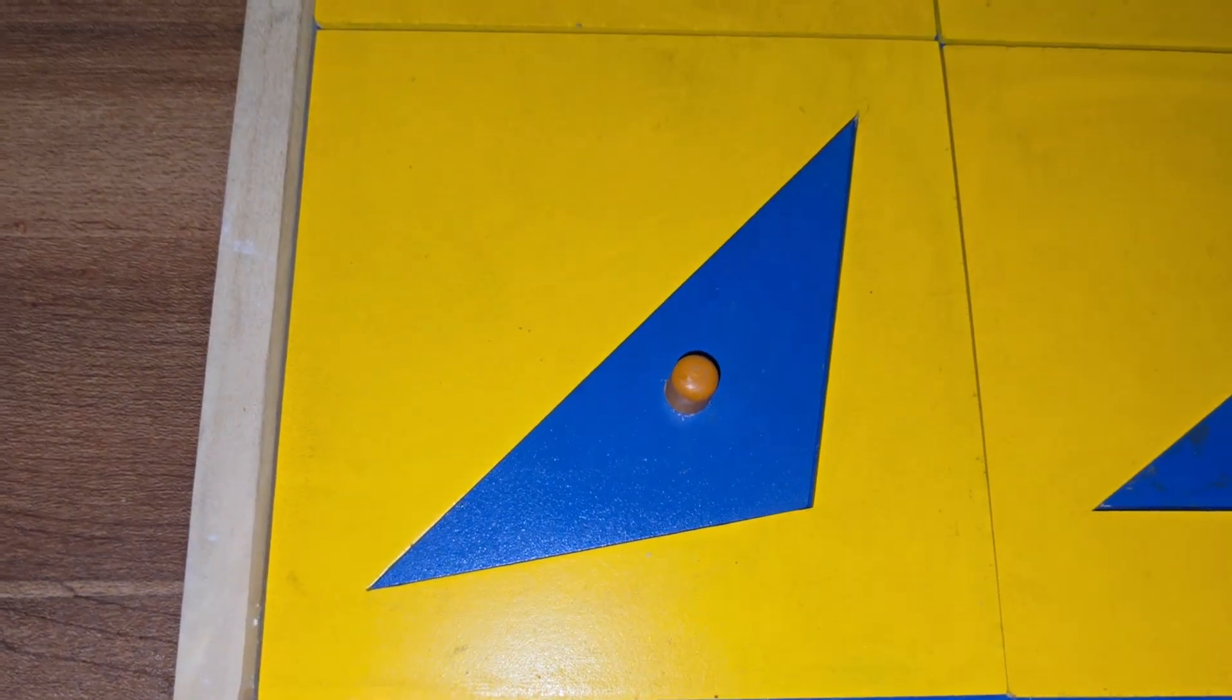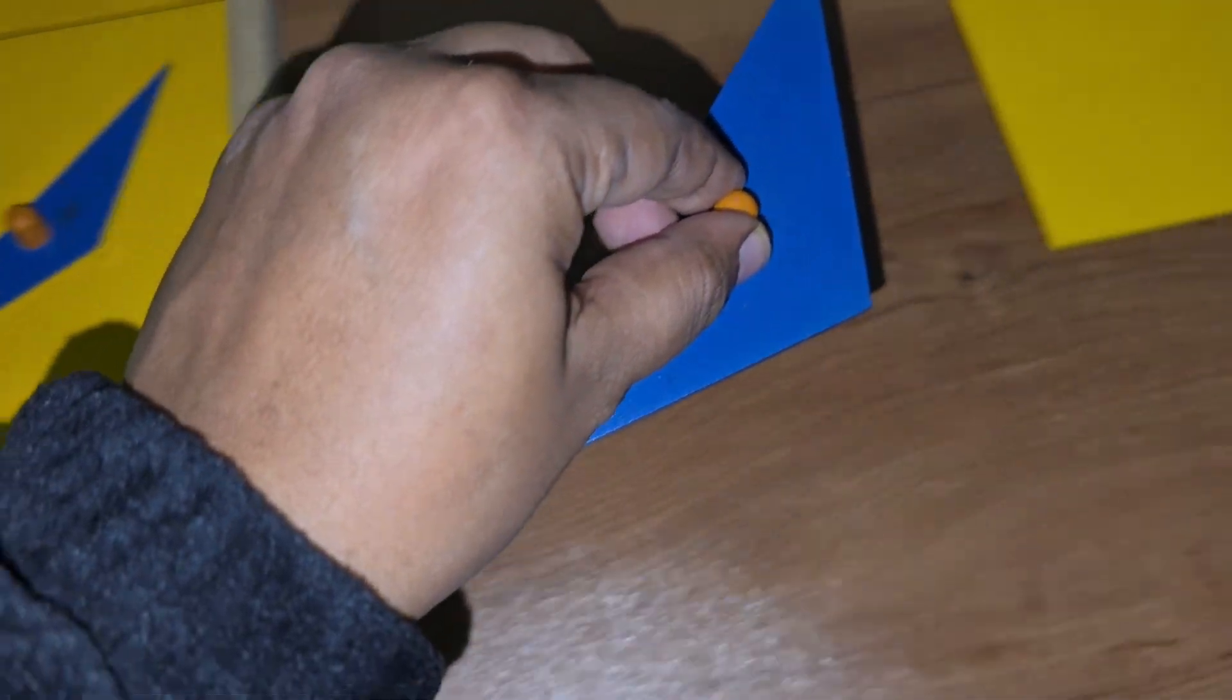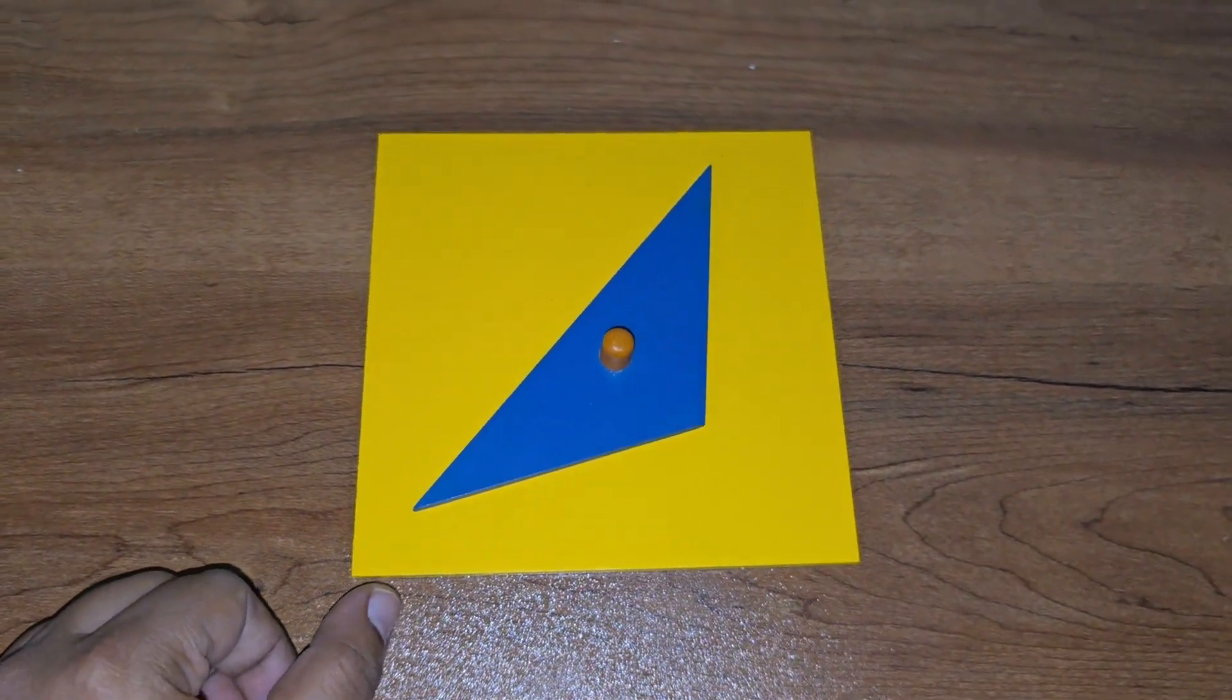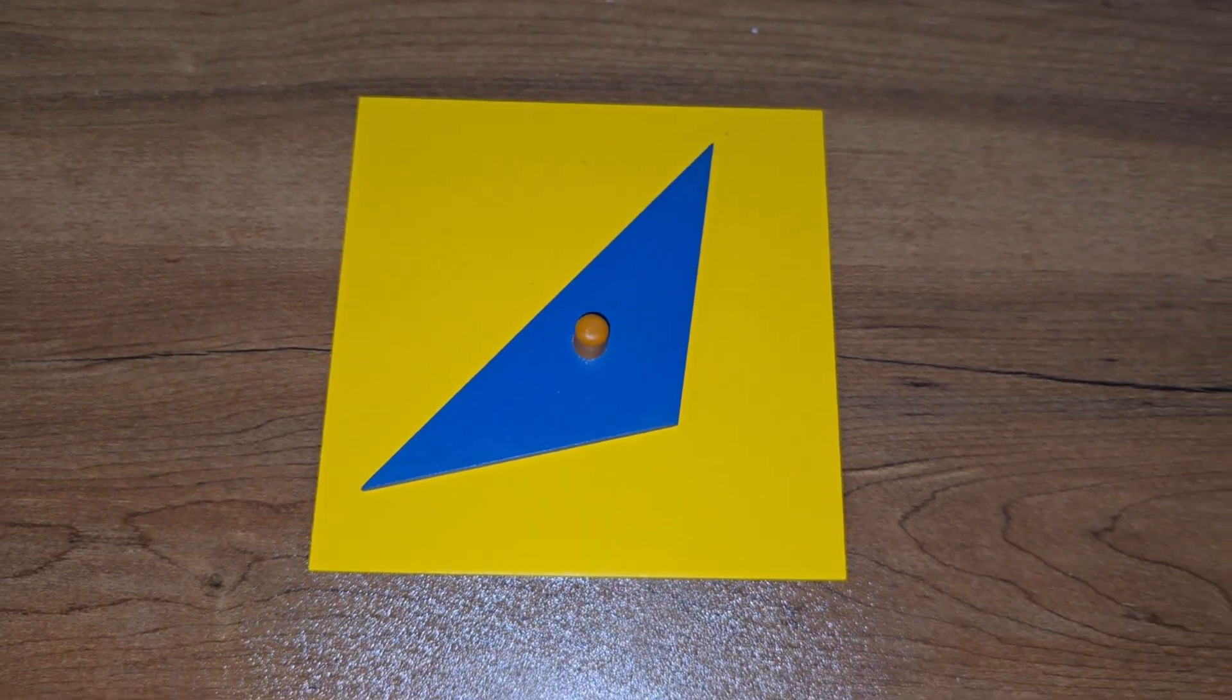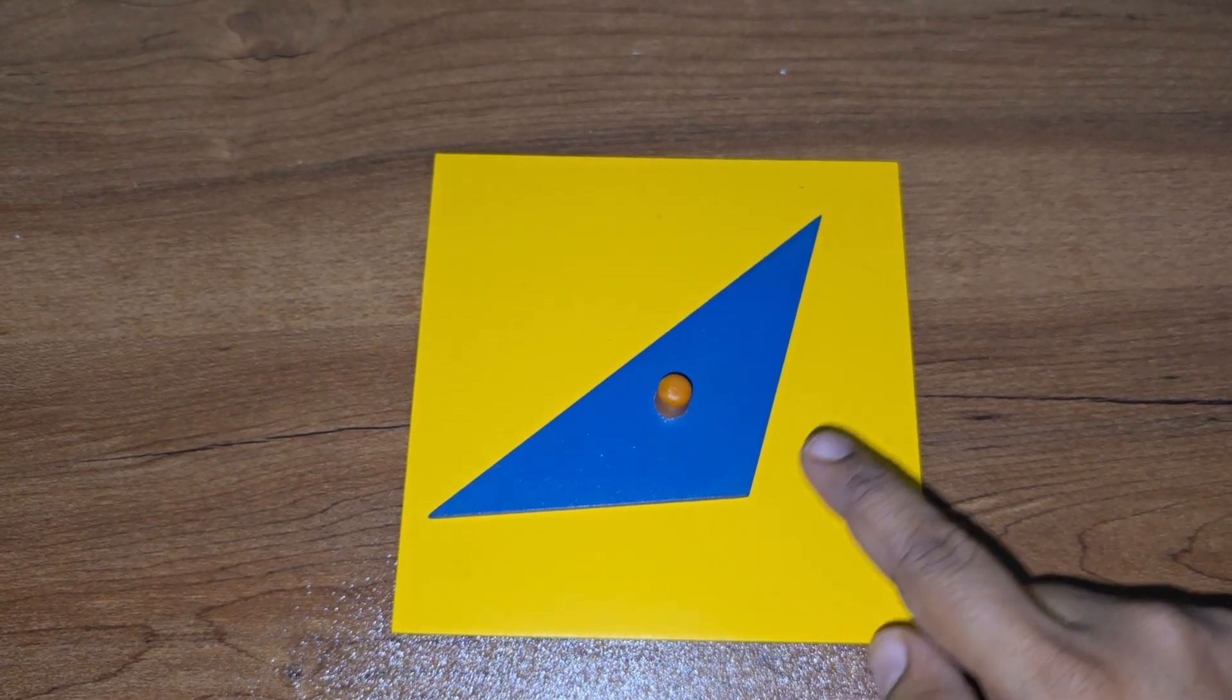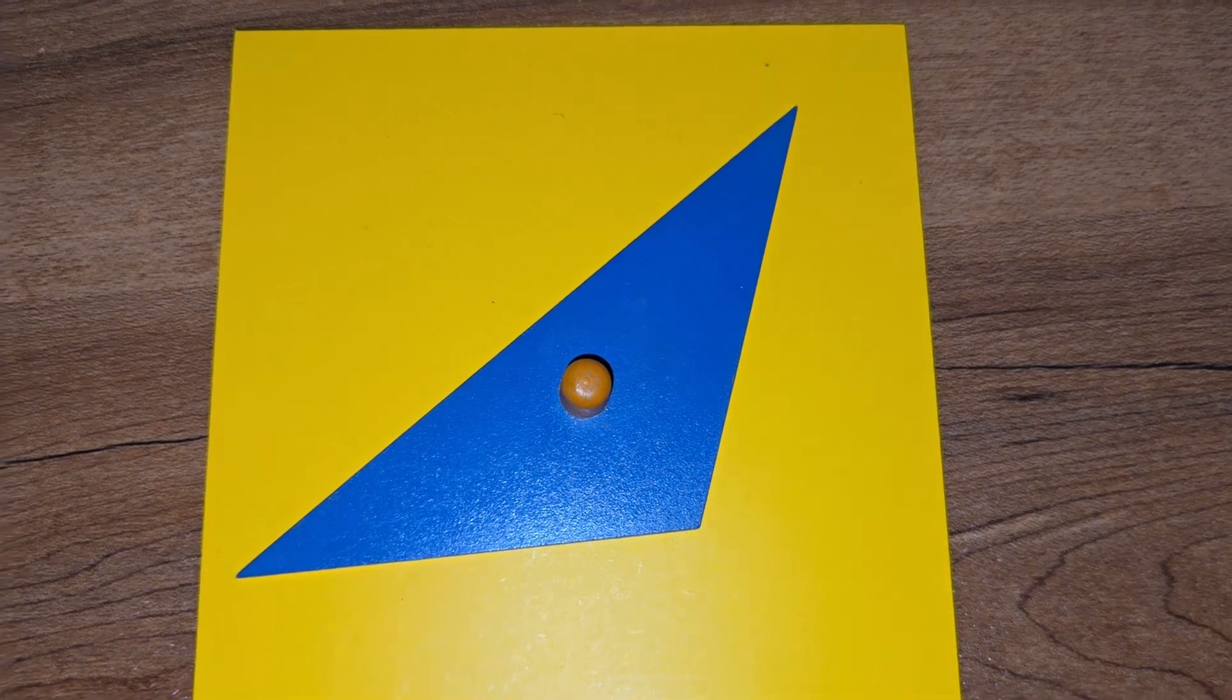Here comes our next triangle: obtuse angle isosceles triangle. Here, two angles are equal and one angle will be more than 90 degrees. For example, 30, 30, and 120.